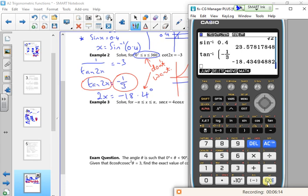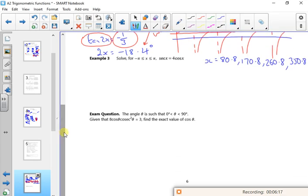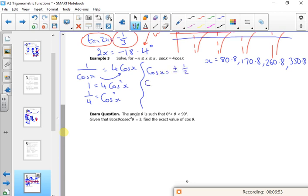Right, so let's have a look at this one then, example three. So example three is sec x equals 4 cos x. Sec is 1 over cos. So if I take the cos x up, I've got 1 is 4 cos squared x. If I take the 4 down, I've got a quarter is cos squared x. Now I don't want the cos squared, I need to square root it. If you square root a quarter, you get plus or minus a half. So cos x is plus or minus 1 over 2. So I've got a set of values for cos x is minus a half and I've got a set of values for cos x is plus a half.